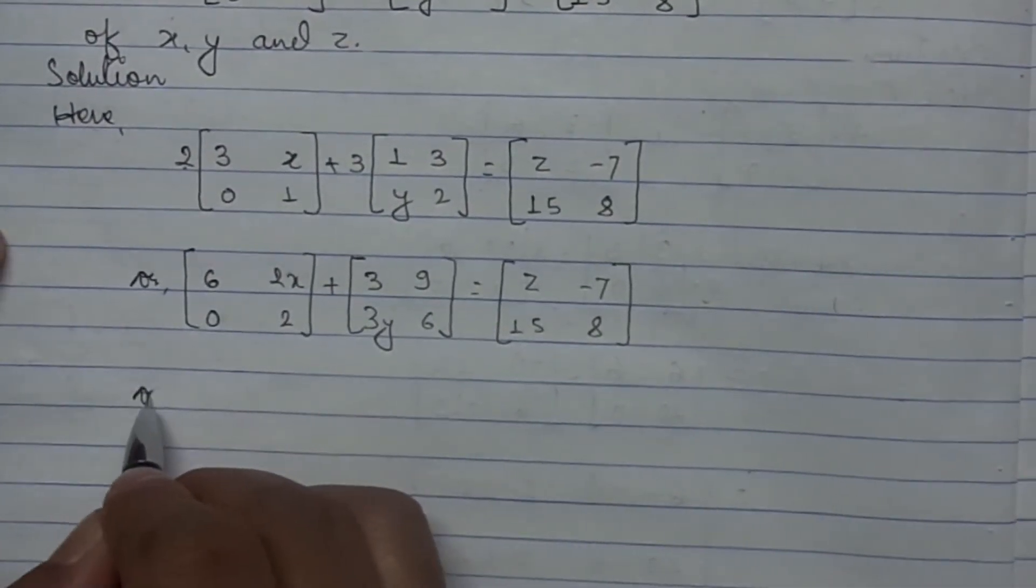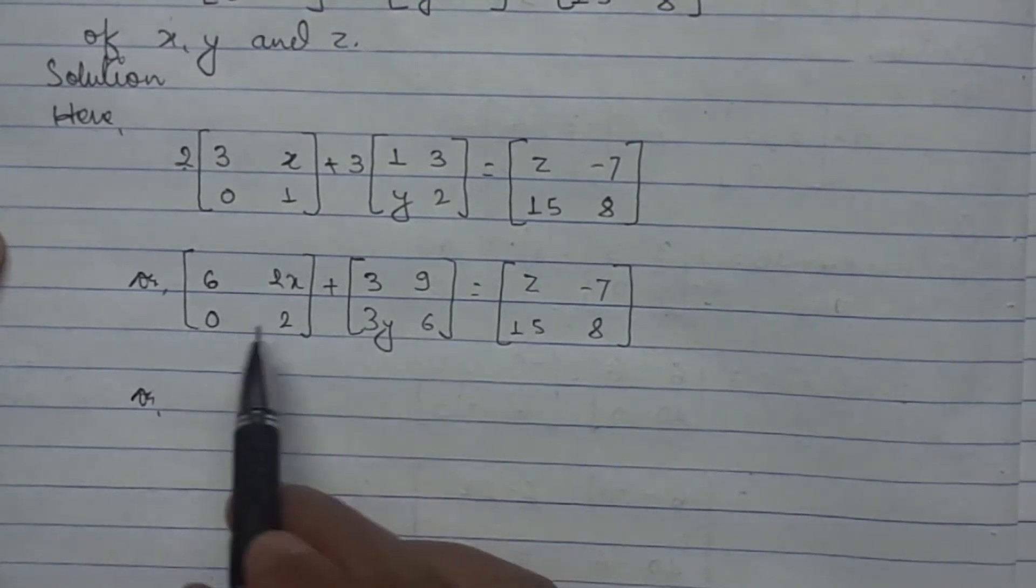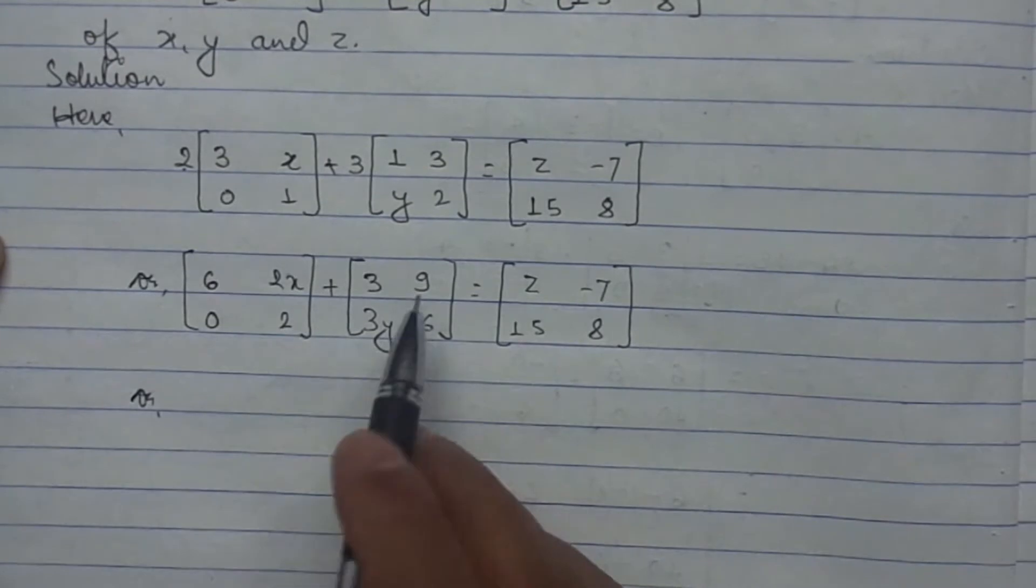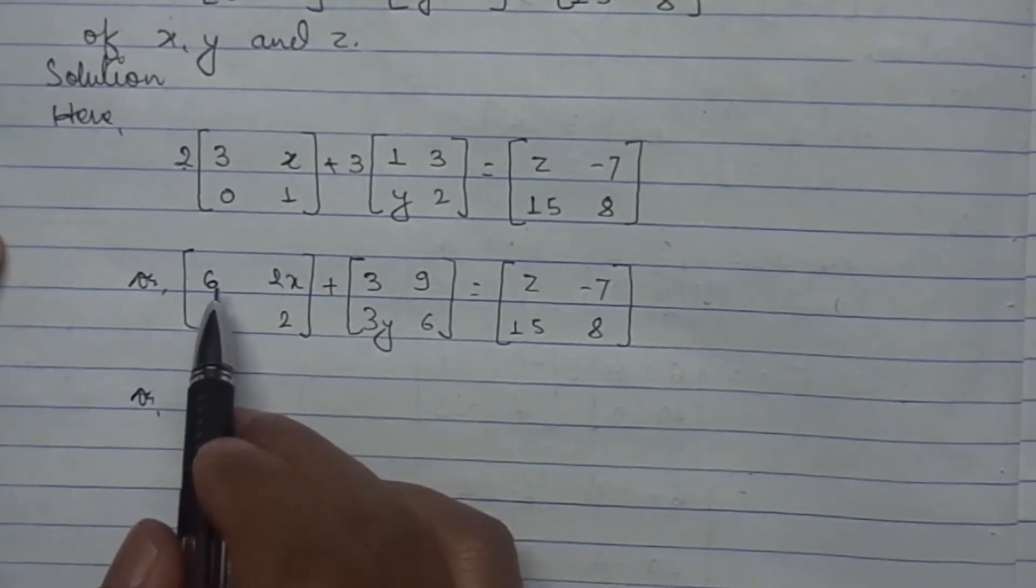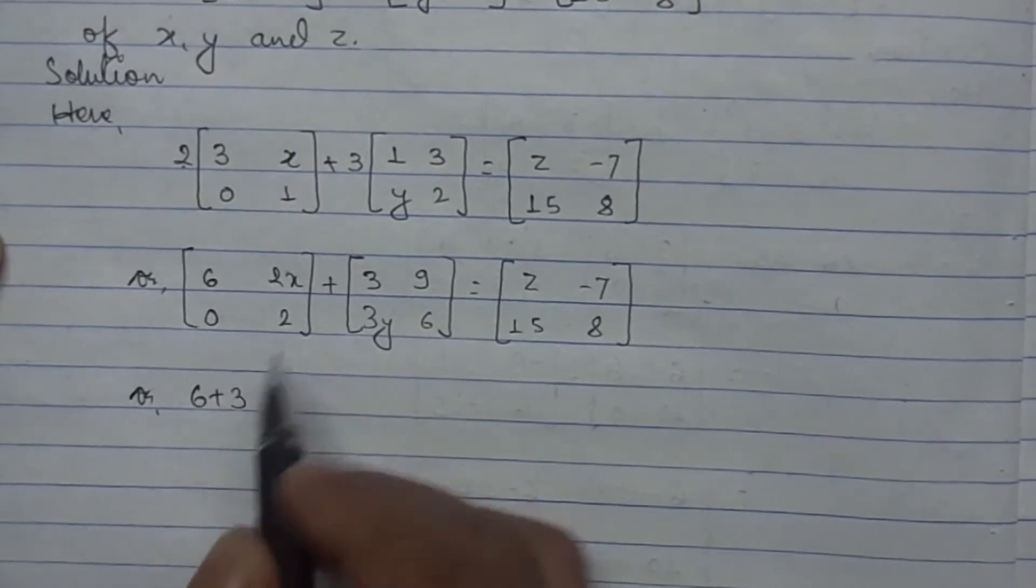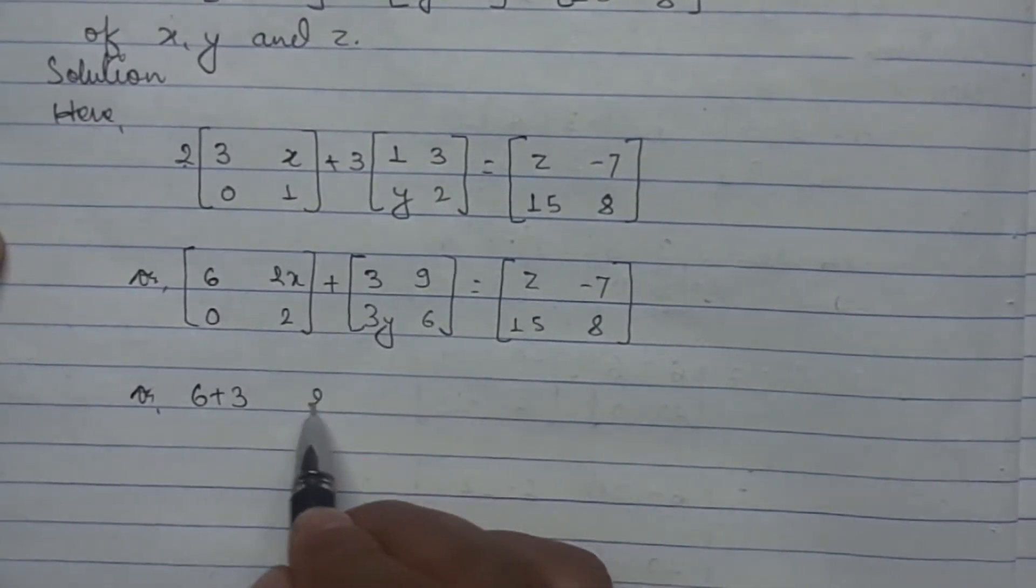See, these two matrices are of same order. It means that we can add these two matrices. Corresponding elements can be added: the 6 with 3, 2x with 9.